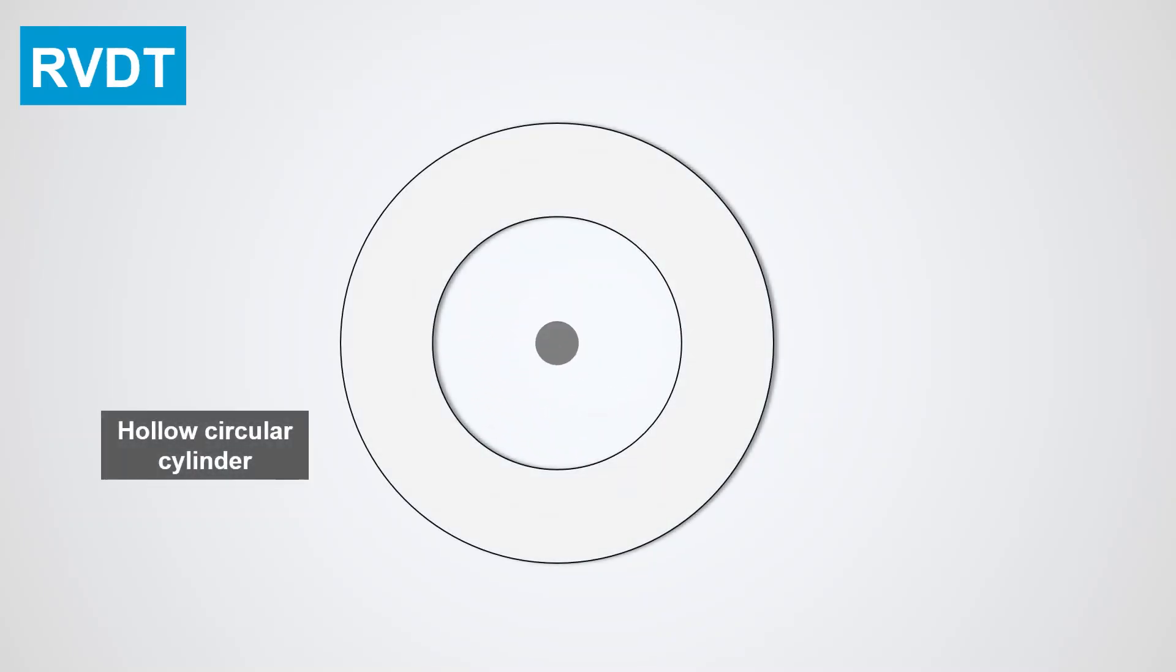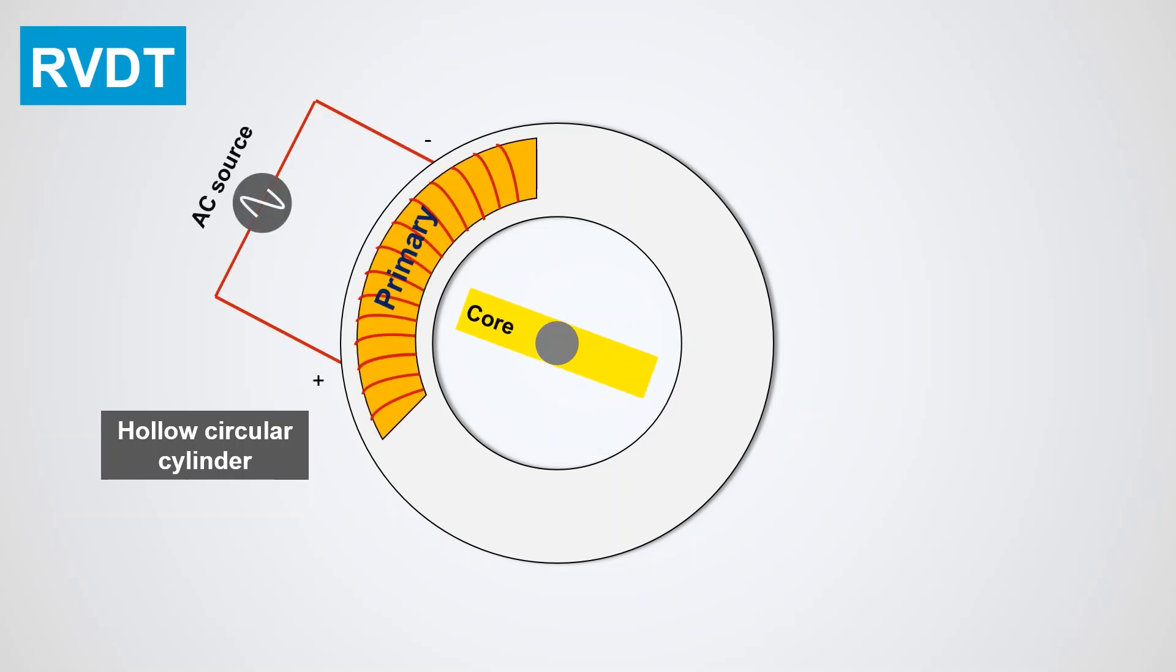An RVDT consists of a hollow cylinder with a ferromagnetically conducted core rotating in clockwise and anticlockwise direction freely between the hollow cylinder. A primary coil is wrapped around the hollow cylinder and is energized by a constant amplitude AC source known as the primary excitation.